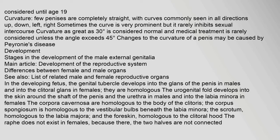In the developing fetus, the genital tubercle develops into the glans of the penis in males and into the clitoral glans in females — they are homologous. The urogenital fold develops into the skin around the shaft of the penis and the urethra in males, and into the labia minora in females. The corpora cavernosa are homologous to the body of the clitoris, and the corpus spongiosum is homologous to the vestibular bulbs beneath the labia minora. The scrotum is homologous to the labia majora and the foreskin to the clitoral hood.